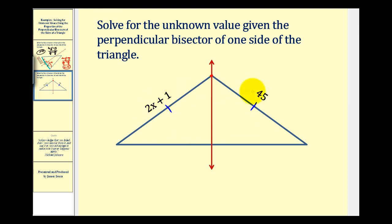2x plus 1 must be equal to 45. So we'll subtract 1 on both sides. Give us 2x equals 44. Divide both sides by 2. So we have x equals 44 divided by 2 is equal to 22.